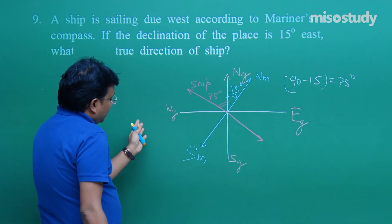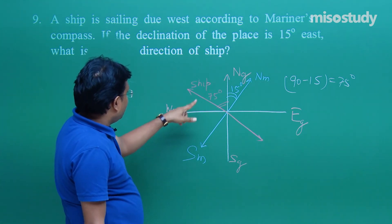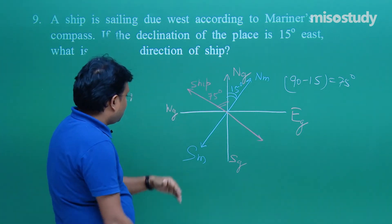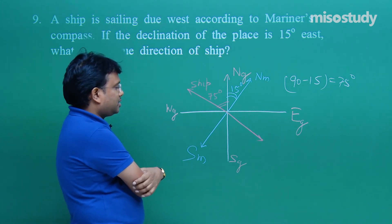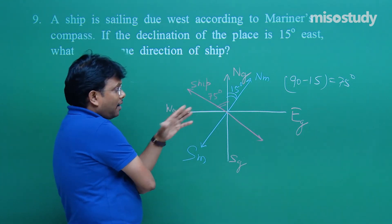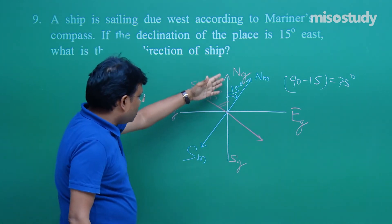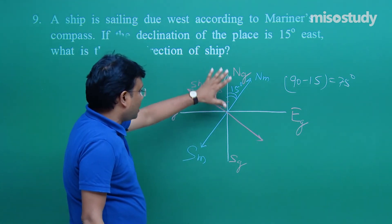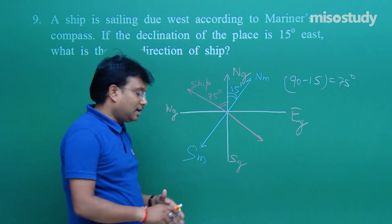Accordingly the ship is moving 75 degrees west of geographic north — so west of geographic west. This is the explanation of this question. Here you need not calculate; if you have the understanding, just use one or two colored pens and create this diagram.